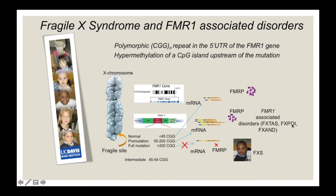The FMR1 gene is located at the tip of chromosome X and contains a polymorphic CGG repeat element in the 5-prime UTR of the gene. Depending on the number of CGG repeats, there are different outcomes. Individuals with alleles carrying between 45 and 54 CGG repeats produce normal levels of mRNA and normal levels of FMRP, which is the encoded protein.